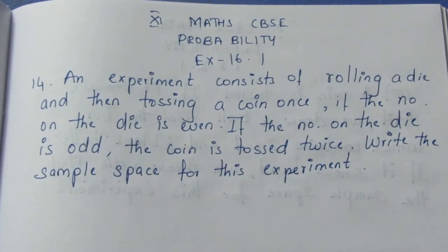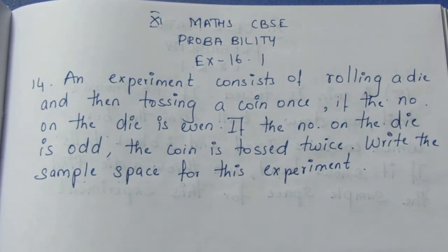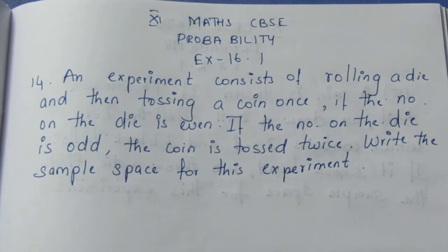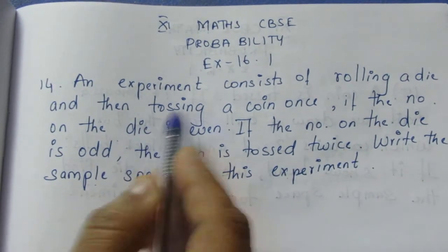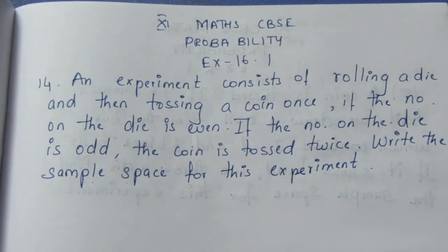An experiment consists of rolling a die and then tossing a coin once. If the number on the die is even, if the number on the die is odd, if the number of die is even, tossing a coin once and so on.